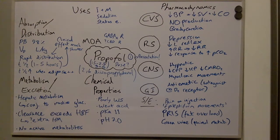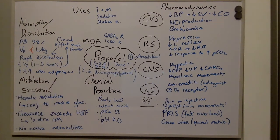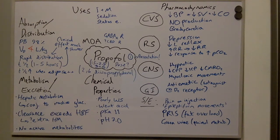Now to discuss the pharmacokinetics of propofol. It has protein binding of 98% and a volume of distribution of 4 litres per kg. It has rapid distribution into the body's tissues and a half-life of 1–5 hours. However, the clinical effect is much shorter because of this rapid distribution into the body's tissues. The half-life can be increased in a patient with excess adipose tissue.